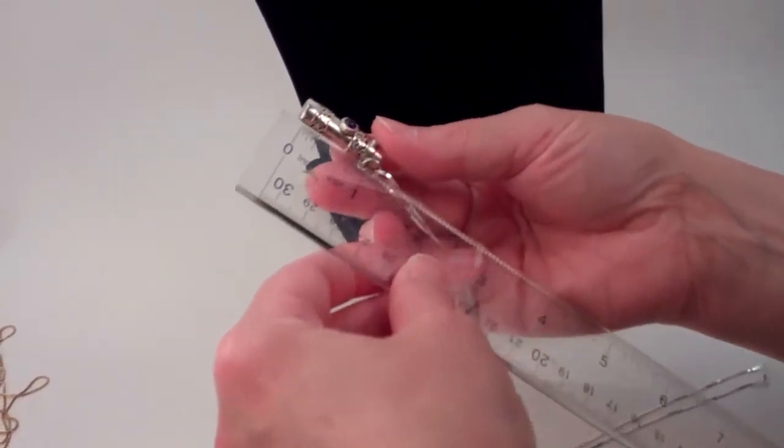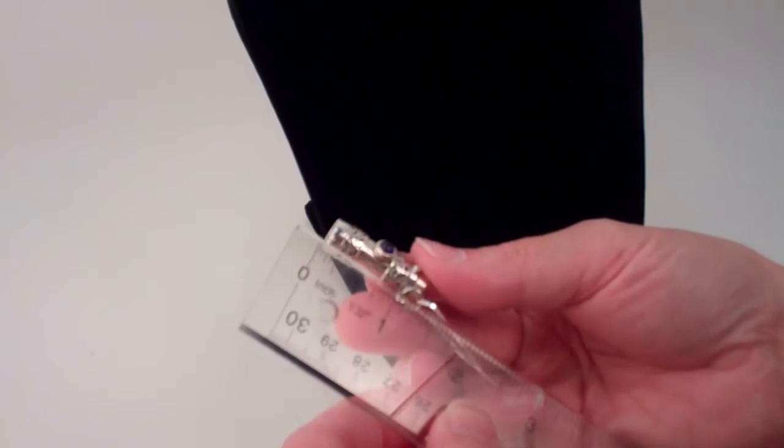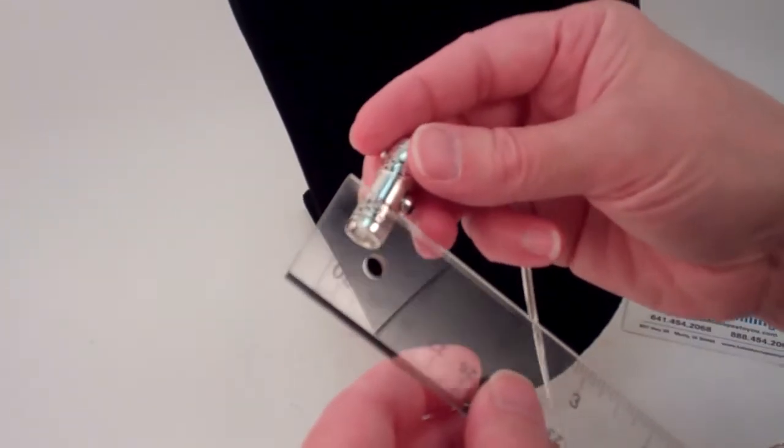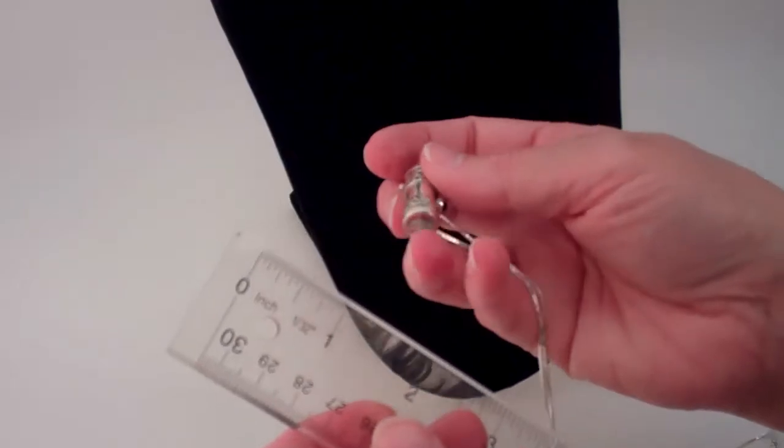The kaleidoscope itself is an inch and a quarter in length and three-eighths of an inch in diameter.